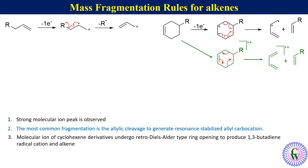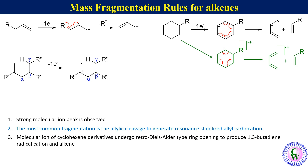Let's have the general structure of an alkene. The carbon next to the alkene is alpha, next to it is beta, and next to that is gamma, with a hydrogen attached. Removal of one pi electron gives this radical cation, which undergoes intramolecular gamma hydrogen abstraction.